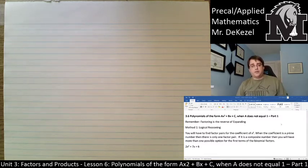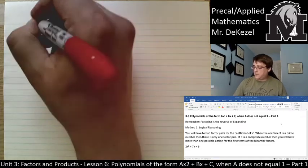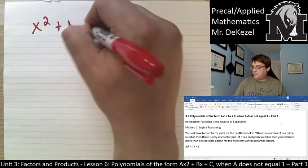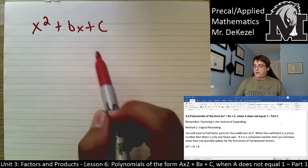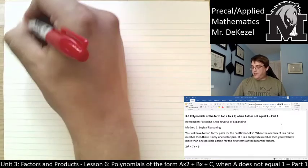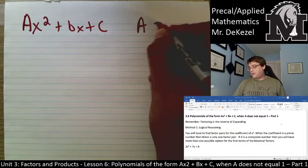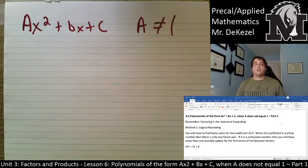We are going to be talking about polynomials in the form of ax squared plus bx plus c when a does not equal 1. So we've been talking about x squared plus bx plus c so far, but now we are going to add a variable in front — a — and a is not going to equal 1. It will never equal 1 in these situations.